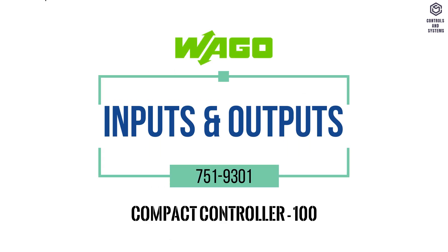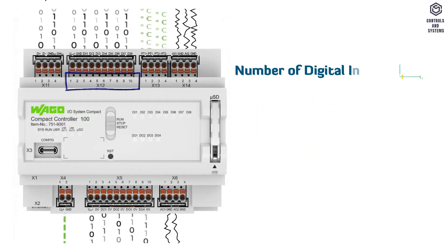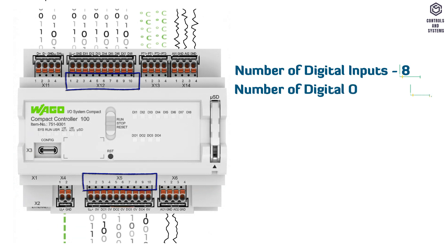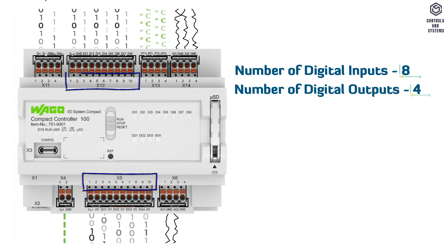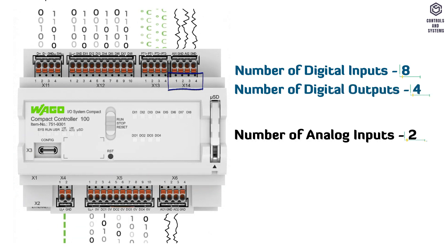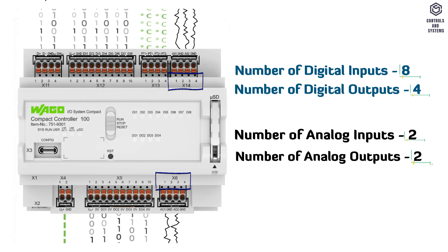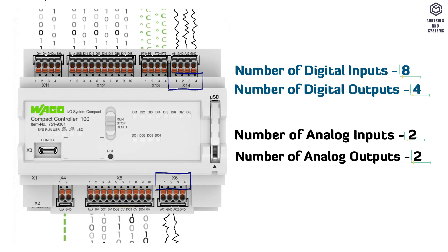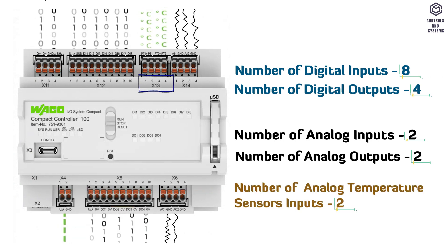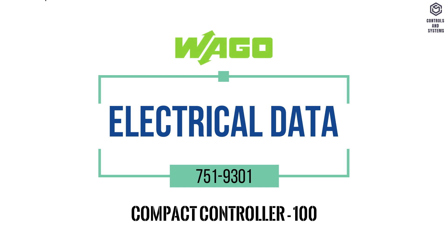Inputs and outputs: The number of digital inputs is 8 and digital outputs is 4. The number of analog inputs is 2, analog outputs is 2, and analog temperature sensor inputs is 2.